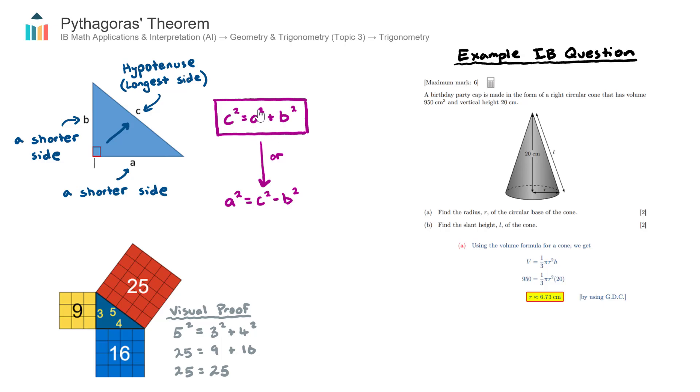Now we use this one here if we want to find out the length of c if we have lengths a and b. Or we can rearrange the theorem to this format here if we want to find one of the two shorter side lengths if we have the longest side and the third side length. So for example, if we wanted to find the side length a and we had side lengths c and b, we could use a rearranged version. And it's very important to practice rearranging this depending on which side length you are trying to find.